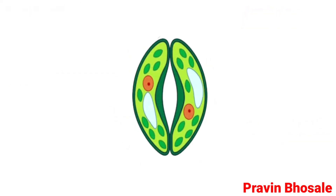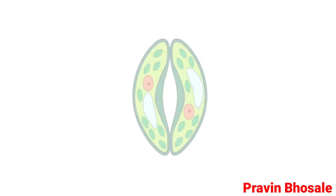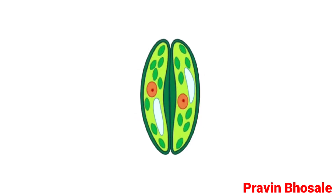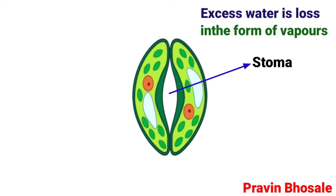Guard cells have the ability to change their size and form, due to which the stoma opens, widens, or closes and narrows. The stoma is an elliptical pore formed due to the specific arrangement of guard cells. It is through the stoma that excess water is lost in the form of vapour.